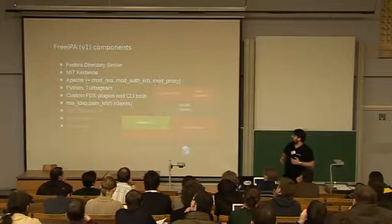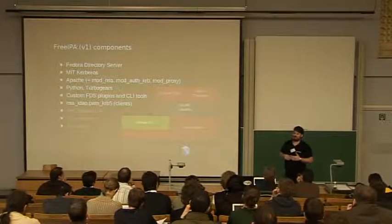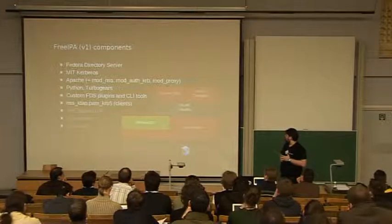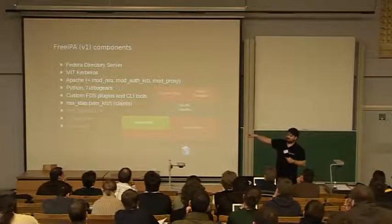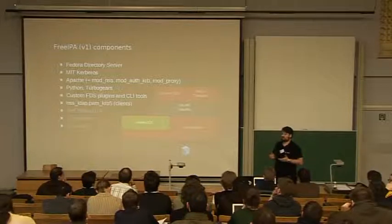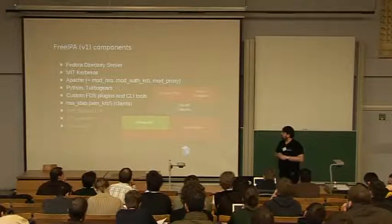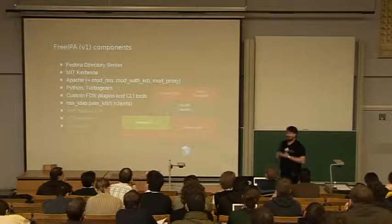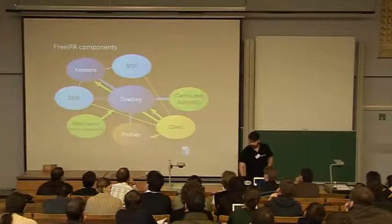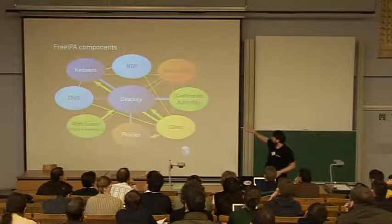On the client side in V1, we use NSS_LDAP and pam_krb5 on Linux — most Unix systems have equivalents. What we don't have, shown in gray, is a proper CA in V1. What we do in the default installation is create a self-signed CA and expose the certificate through the web server — it's not ideal. We also don't have policies in V1, and we don't have the audit piece.